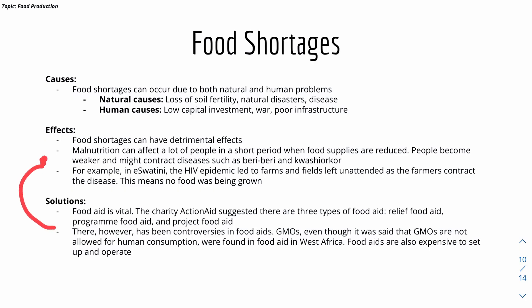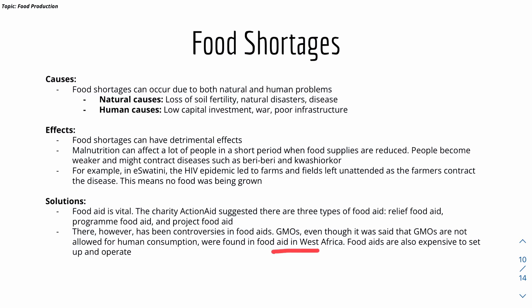Solutions to food shortage effects include food aid, which is vital in such scenarios. The charity Action Aid identifies three types of food aid: Relief Food Aid, Program Food Aid, and Project Food Aid. However, there are controversies — GMOs, though not approved for human consumption, were found in food aid in West Africa. Food aid is also expensive to set up and operate, so government intervention may be needed.